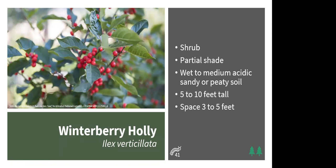Winterberry holly is a shrub growing 5–10 feet tall, preferring partial shade but tolerating full sun or full shade. It likes medium to wet, slightly acidic soil and can do well in peaty or sandy conditions. It's dioecious — separate male and female plants — so buy at least two to ensure you get berries. Hollies support 41 caterpillar species, including sphinx moths, polyphemus moths, and oak slug moth caterpillars. The berries serve as a backup food source for birds lasting into winter.